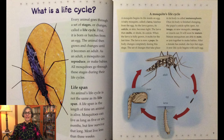Once its body is finished changing, the pupa's cuticle splits open and an imago or new mosquito emerges or crawls out. It will soon be mature. Mature mosquitoes are able to mate or join together to make babies. After a female has mated, she lays her eggs and a new life cycle begins with each egg.